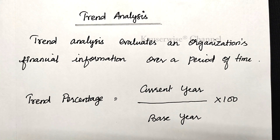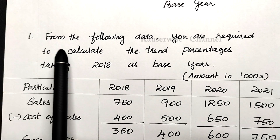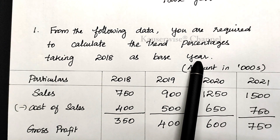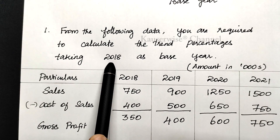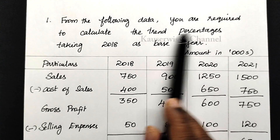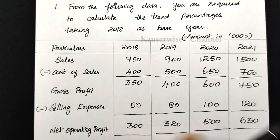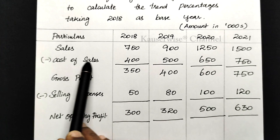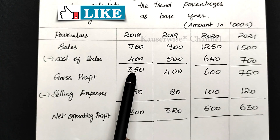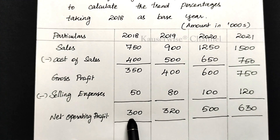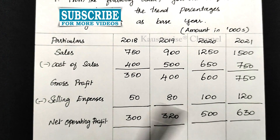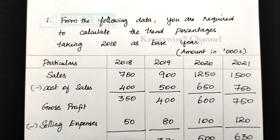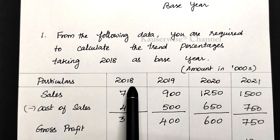Now we will see one numerical problem to have a better understanding of trend analysis. From the following data, you are required to calculate the trend percentages taking 2018 as the base year. They have clearly mentioned that 2018 data is the base information. Based on that we are going to calculate trend percentage for the rest of the 3 years. The values are given in thousands. Under particulars: sales minus cost of sales gives gross profit, and gross profit minus selling expense gives net operating profit. This information is given for 2018, 2019, 2020, and 2021.